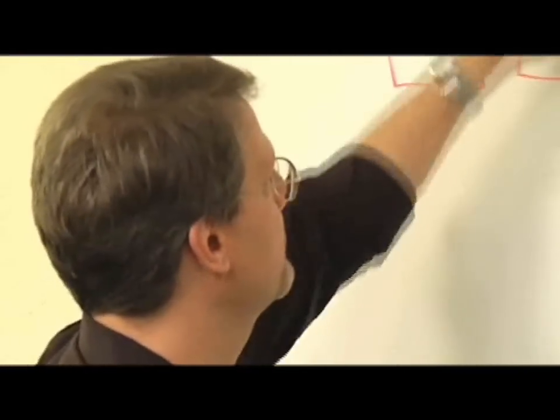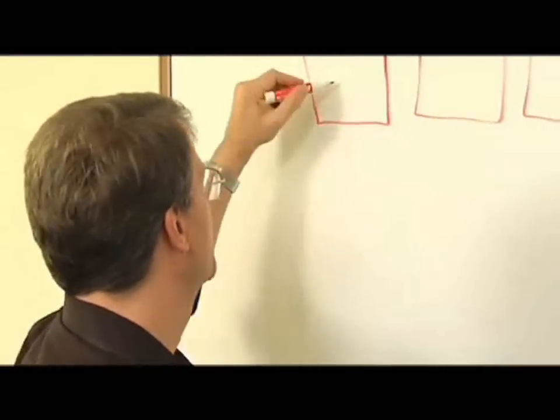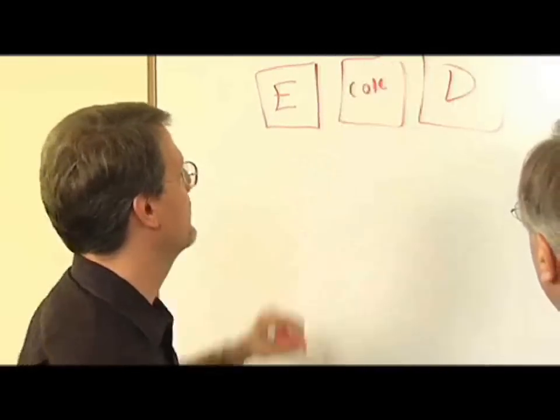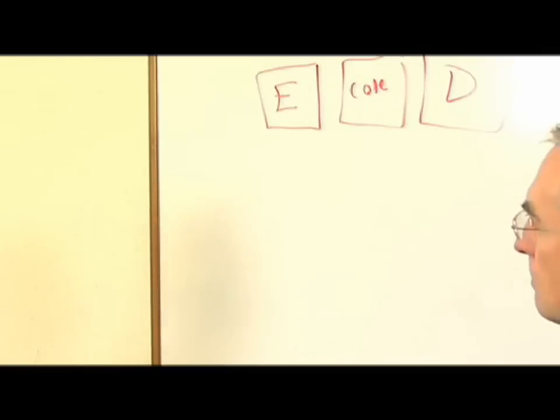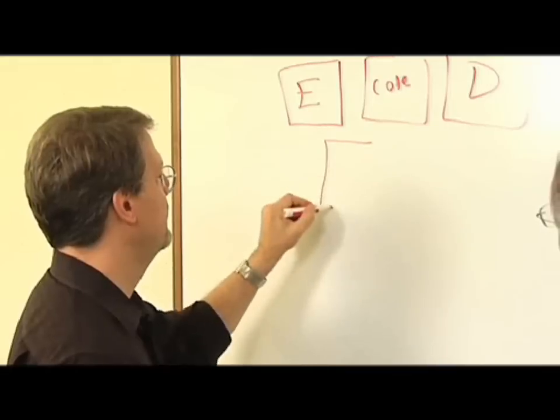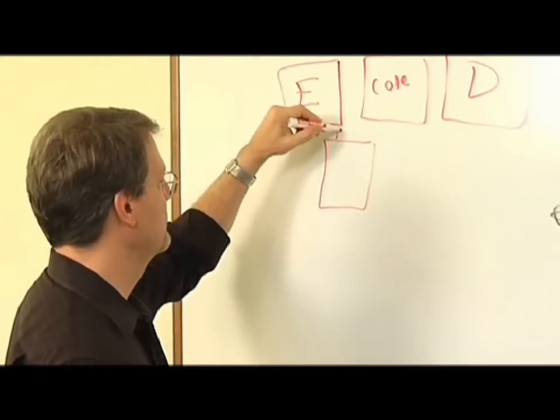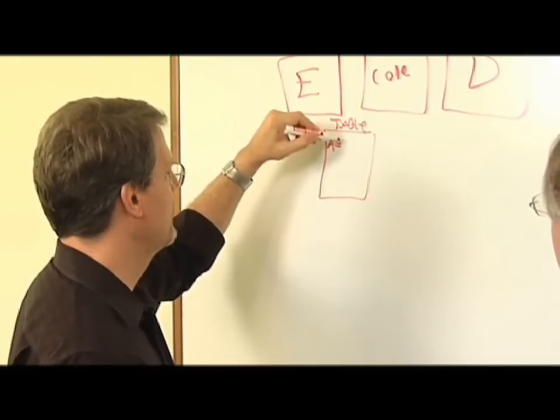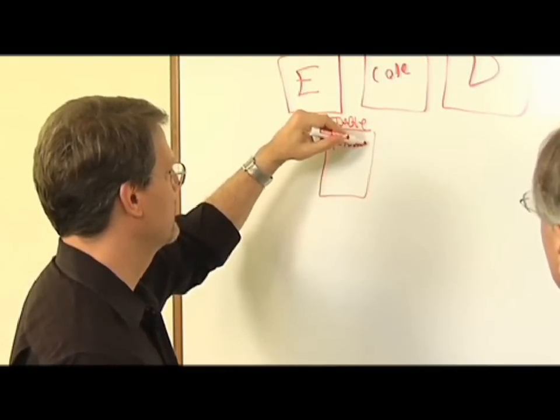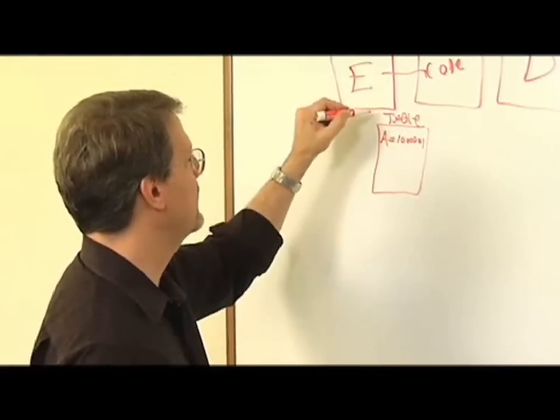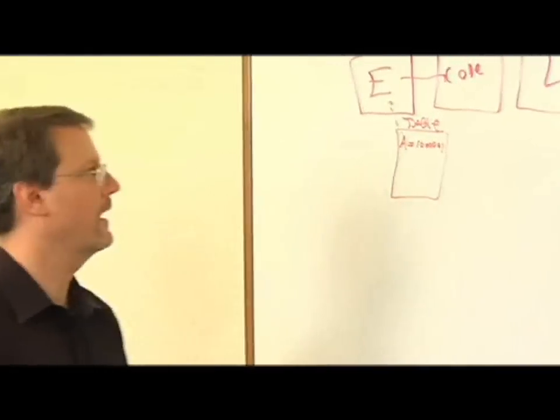Let's go back to our communication system. So we have our encoder, our code, and we have our decoder. And so let's go back to our computer keyboard. In the keyboard there's a table, and the table says A equals 1-0-0-0-0-0-1. And that's the encoding table.